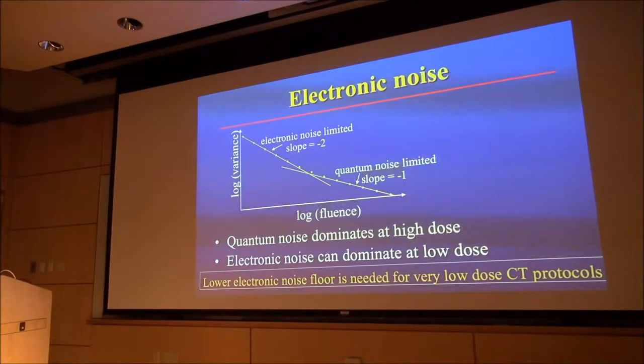There's another problem with our detectors: electronic noise. We expect the variance to go like one over the fluence. If we plot log of variance versus log of fluence, it should have a slope of minus one if it's quantum limited. As the fluence goes down, eventually we run into electronic noise and the slope is minus two. Electronic noise can dominate at low dose. If we want to build systems for very low dose protocols, this will become a limit.